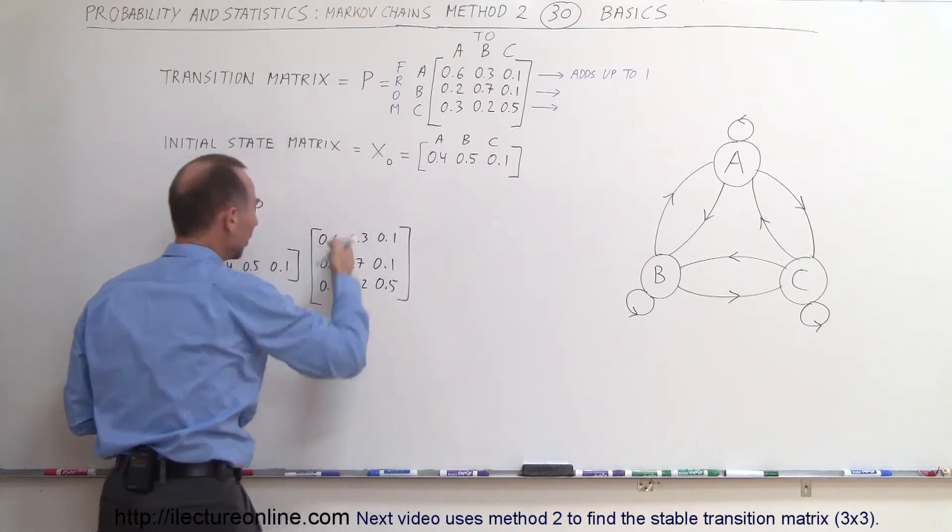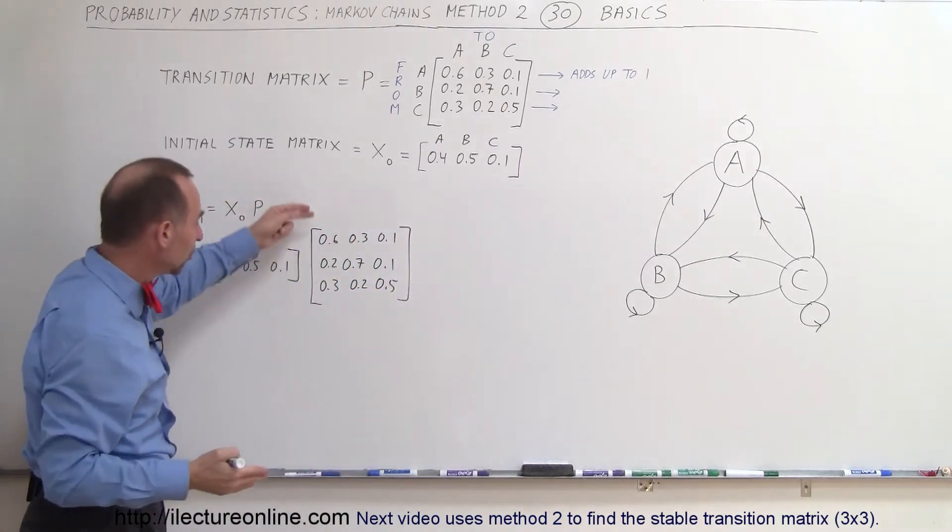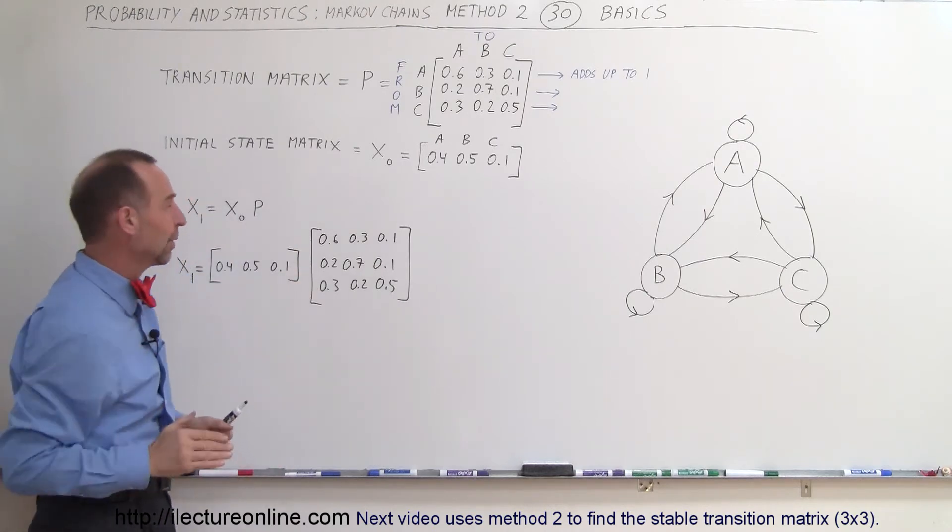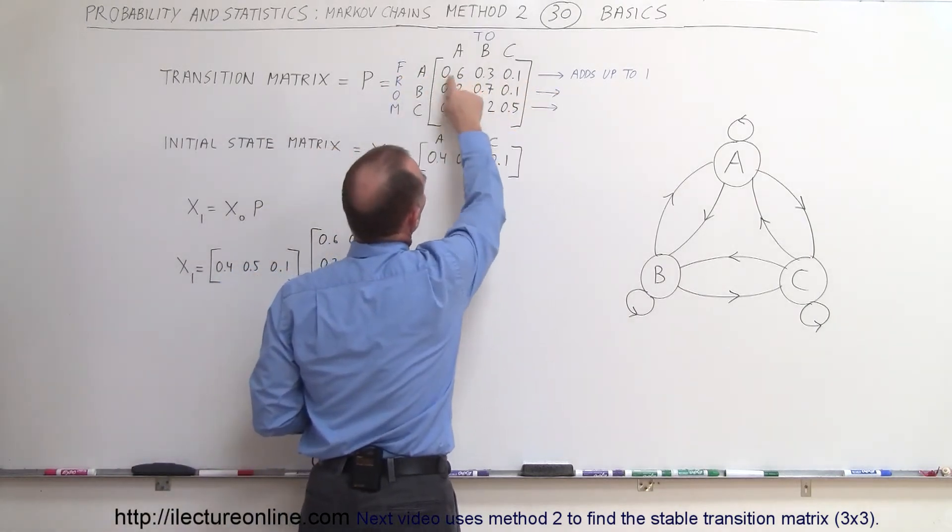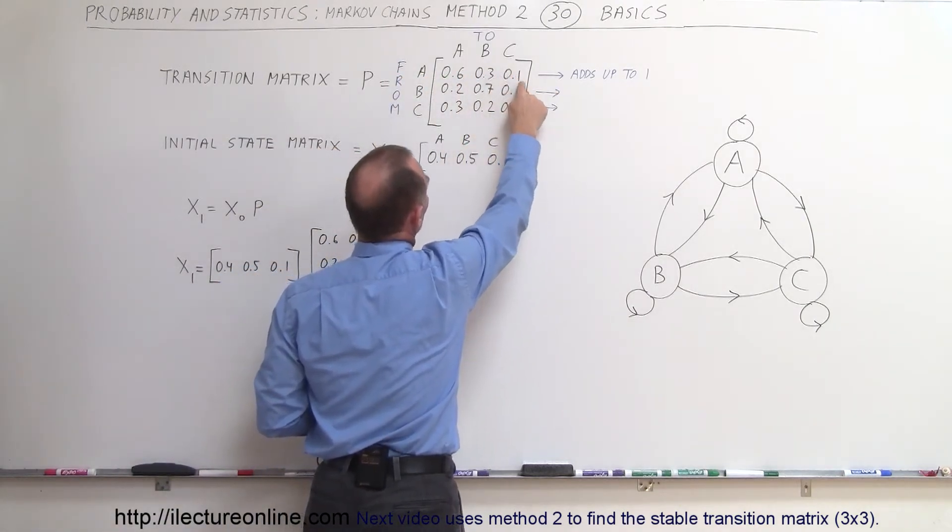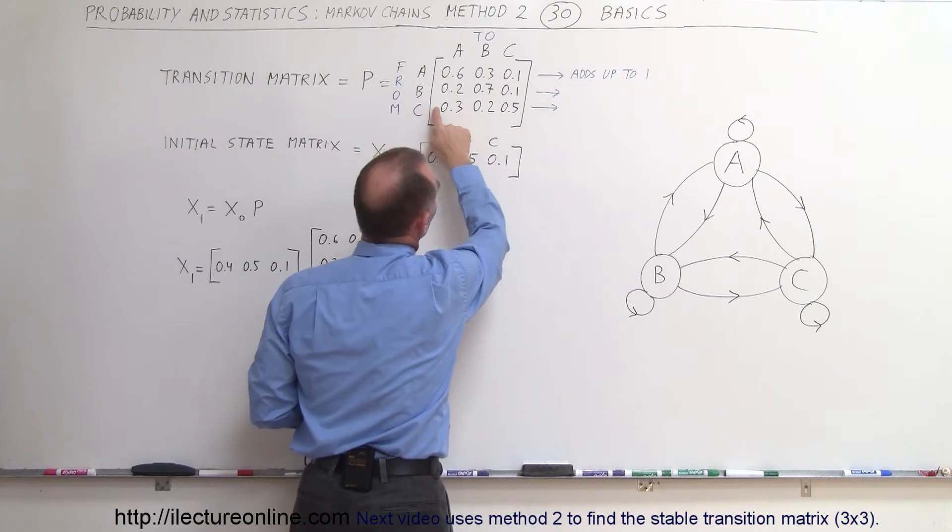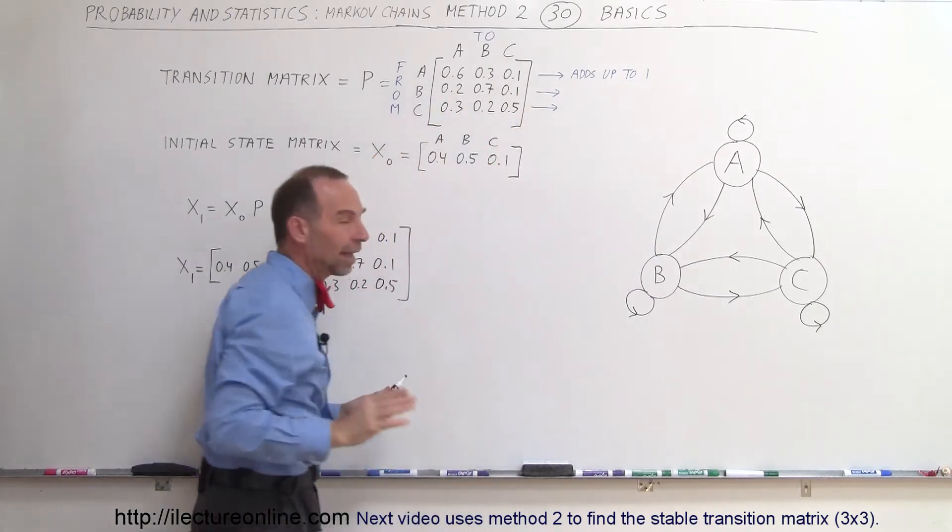Now you say well wait a minute the numbers do not add up to 1 when you go vertically and that's of course correct because they don't have to add up vertically to 1 they have to add up horizontally to 1. if you notice 0.6 plus 0.3 plus 0.1 is 1 this also adds up to 1 that also adds up to 1.